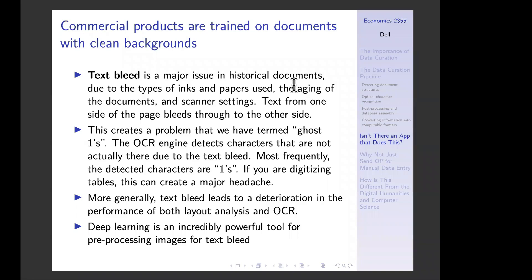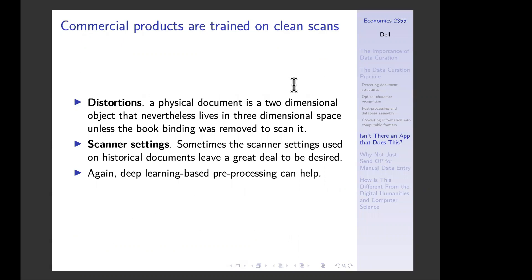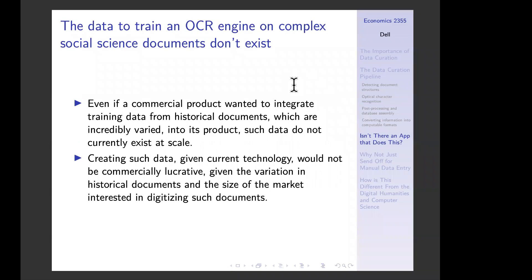Another reason off-the-shelf solutions struggle is that they're trained on documents with clean backgrounds, and text bleed is a major issue in historical documents due to the types of inks used, the aging of documents, and scanner settings. If you flash too much light at a document when scanning it, text will bleed through from the other side of the page. This creates what we called 'ghost ones' — since you can see text bleeding through faintly from the other side, the OCR engine thinks there are characters there and often thinks they're ones. If you're digitizing tables, this is a big problem because putting a one in front of a number where it doesn't belong changes everything by an order of magnitude. Deep learning is an incredibly powerful tool for pre-processing images to remove text bleed.